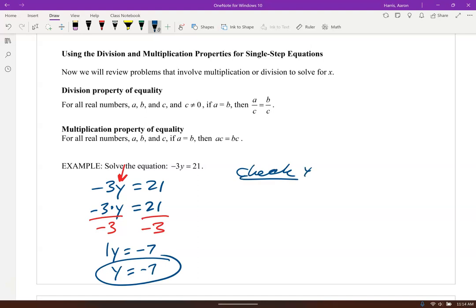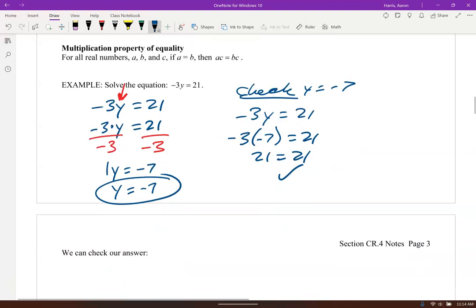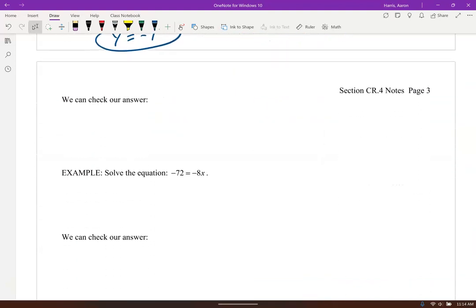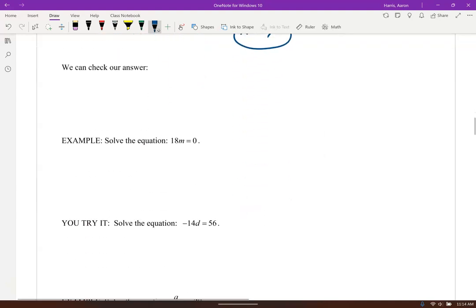Of course, you can check that by plugging it into the original and seeing if it's true. Sure enough, it is true. Let's go ahead and do this similarly for this one. So negative 72 equals negative 8x, divide by negative 8 both sides. I got 1x. Negative 72 over negative 8 is 9. So x equals 9. You can go ahead and check that as well.